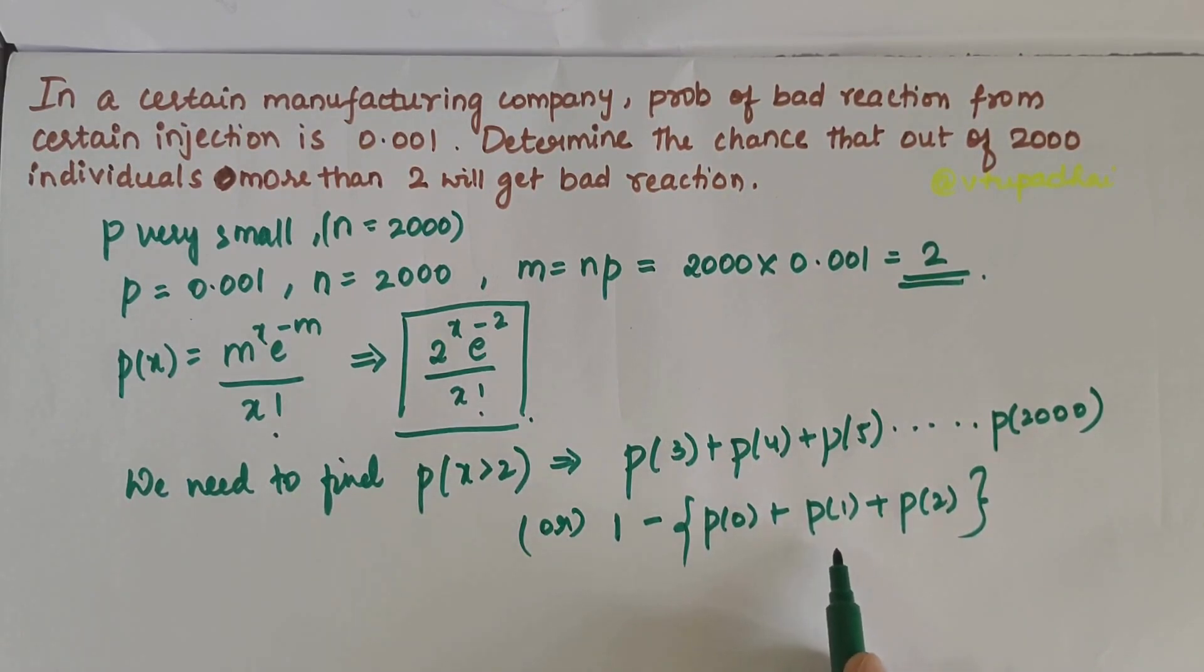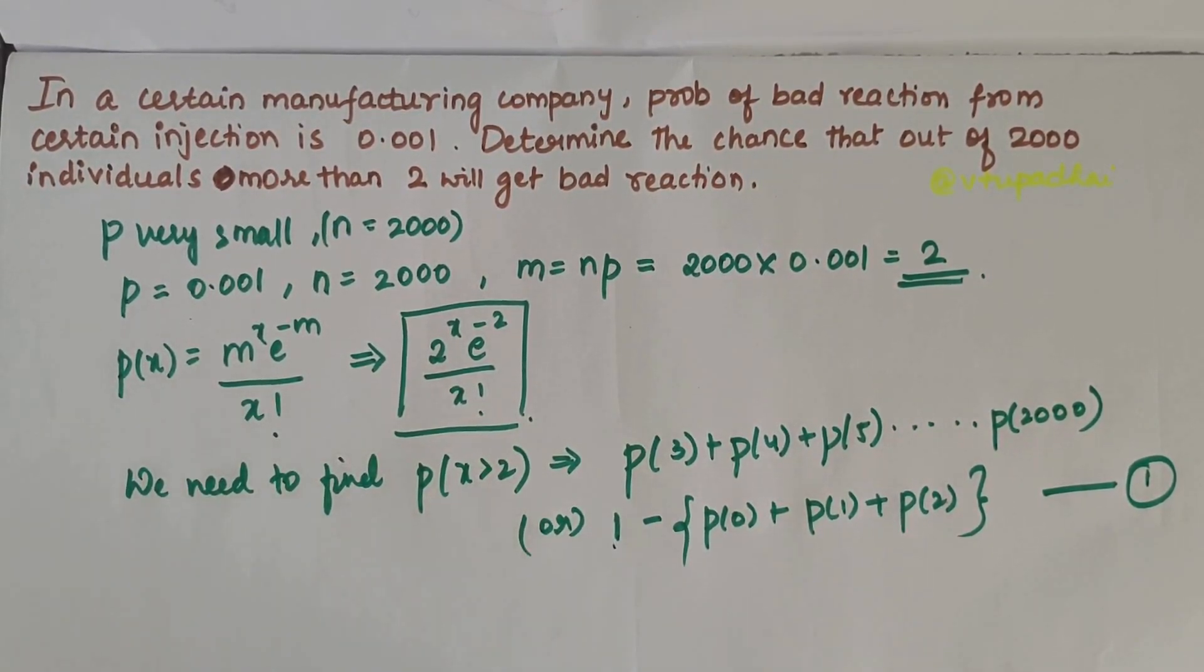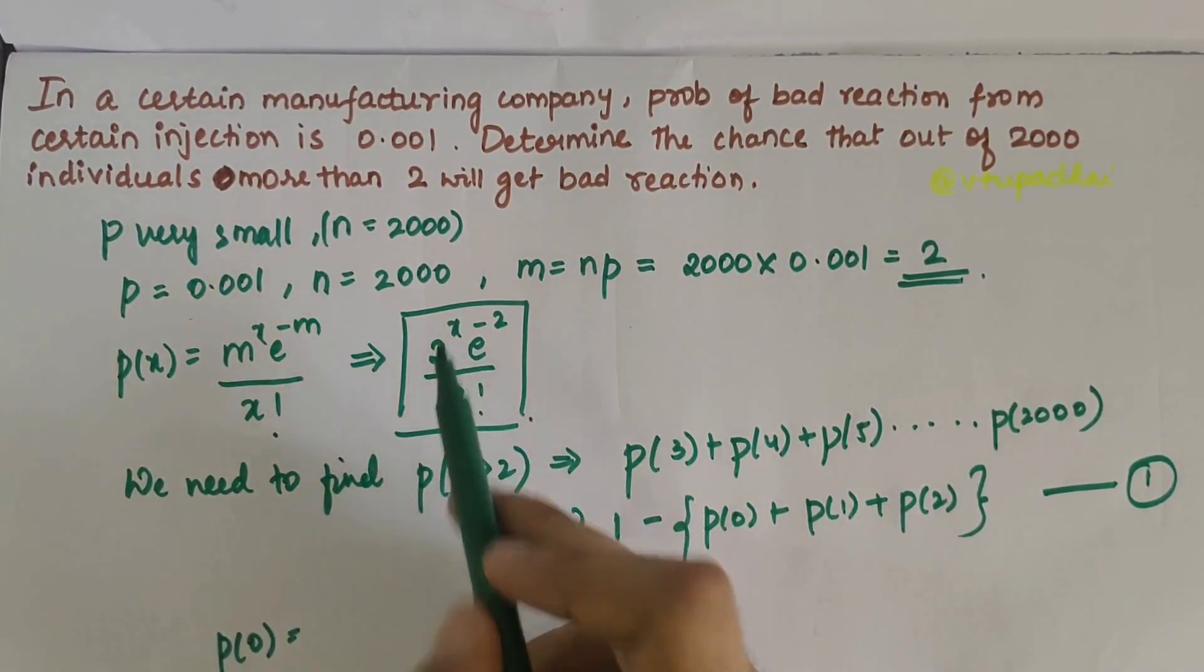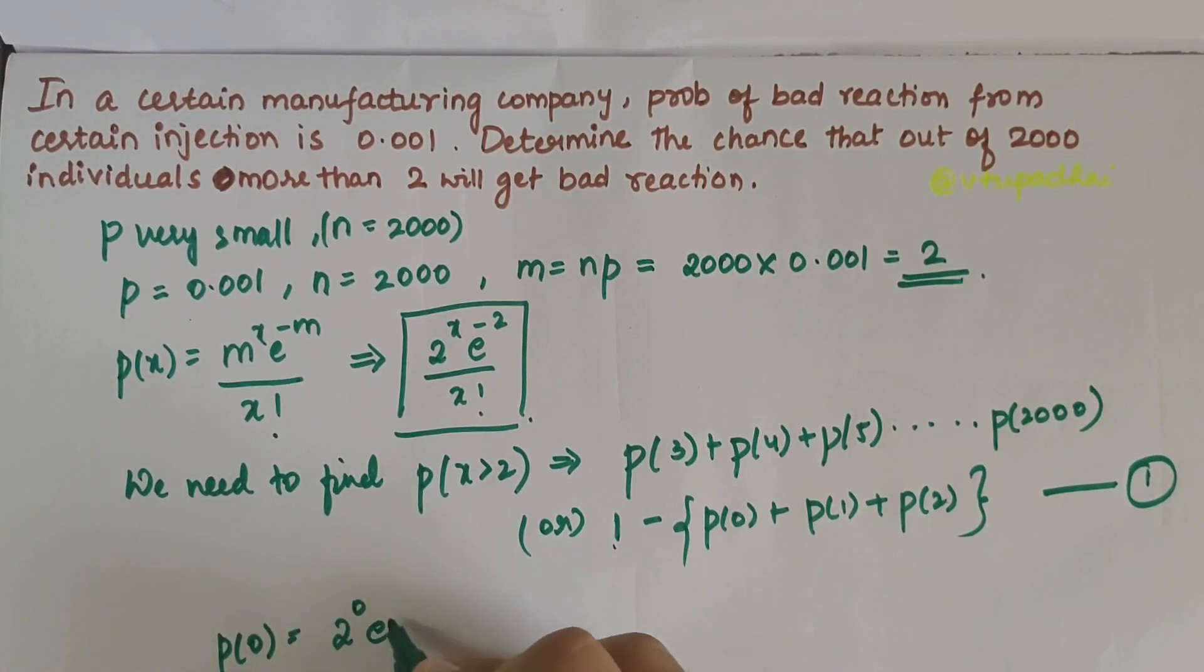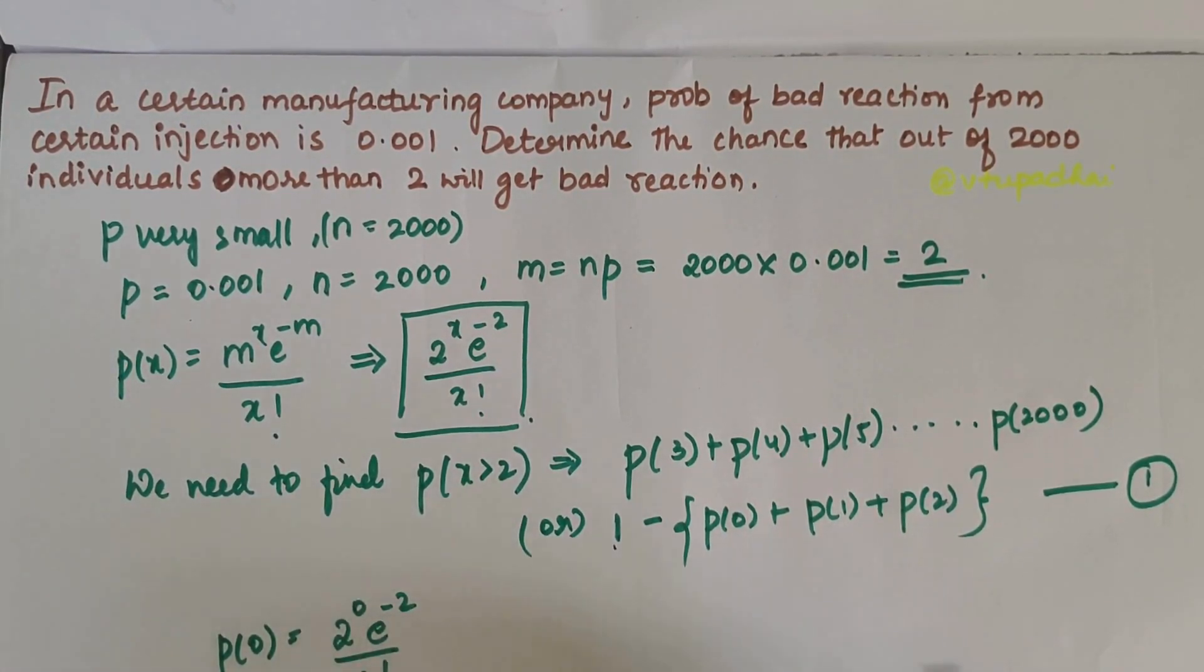We need to calculate P(0), P(1), and P(2), then substitute them into this equation and subtract from 1 to get P(X > 2). First, let's calculate P(0). Substituting x = 0, we get P(0) = 2^0 × e^(-2) / 0! = 0.1353.